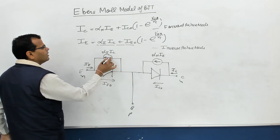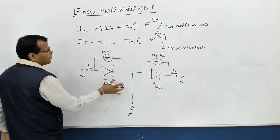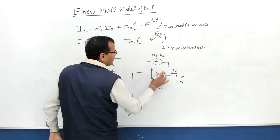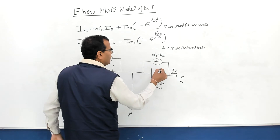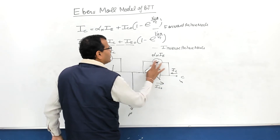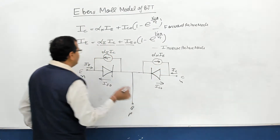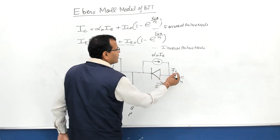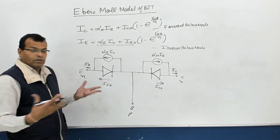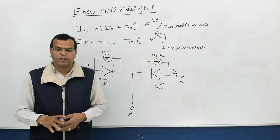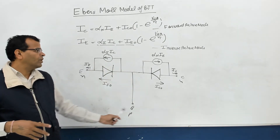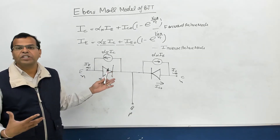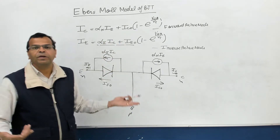For PNP, I will change the direction of the diodes and the direction of the currents accordingly. Otherwise everything is similar — the equations will remain the same.